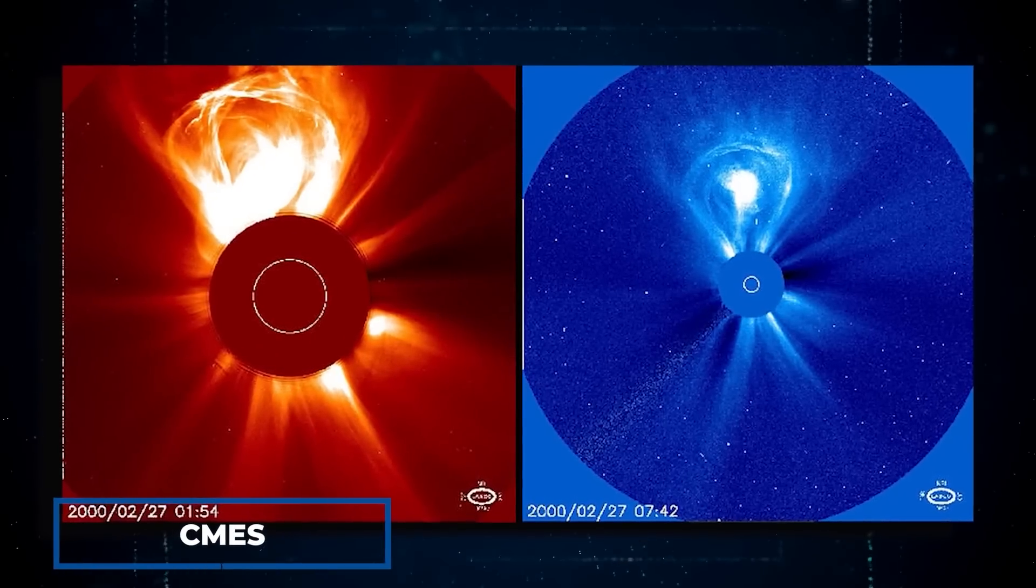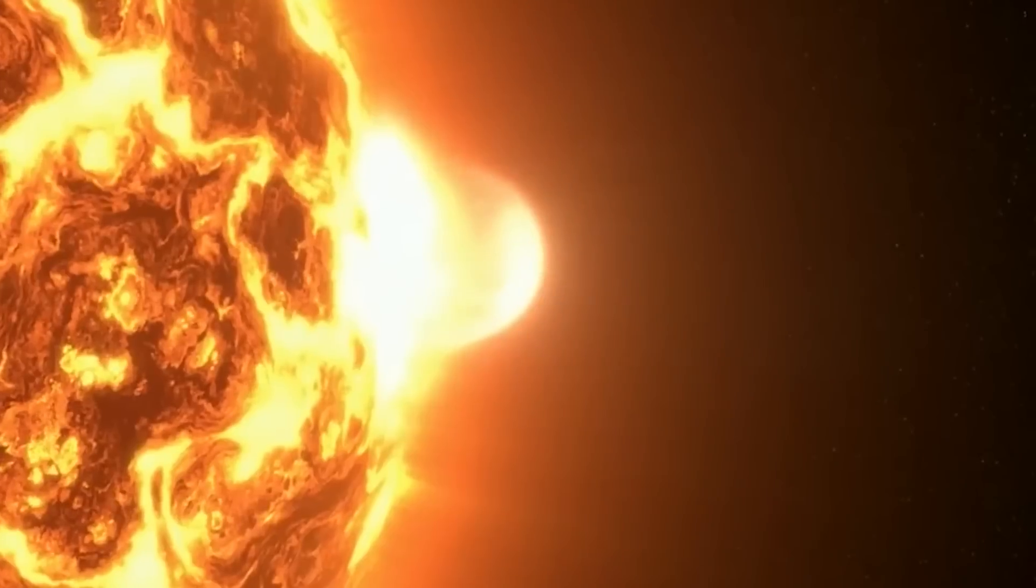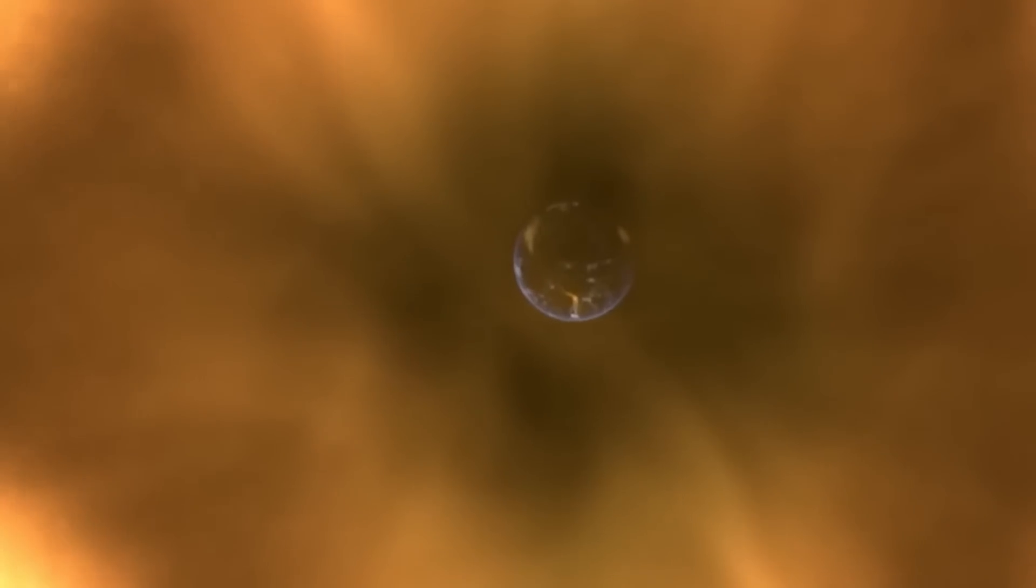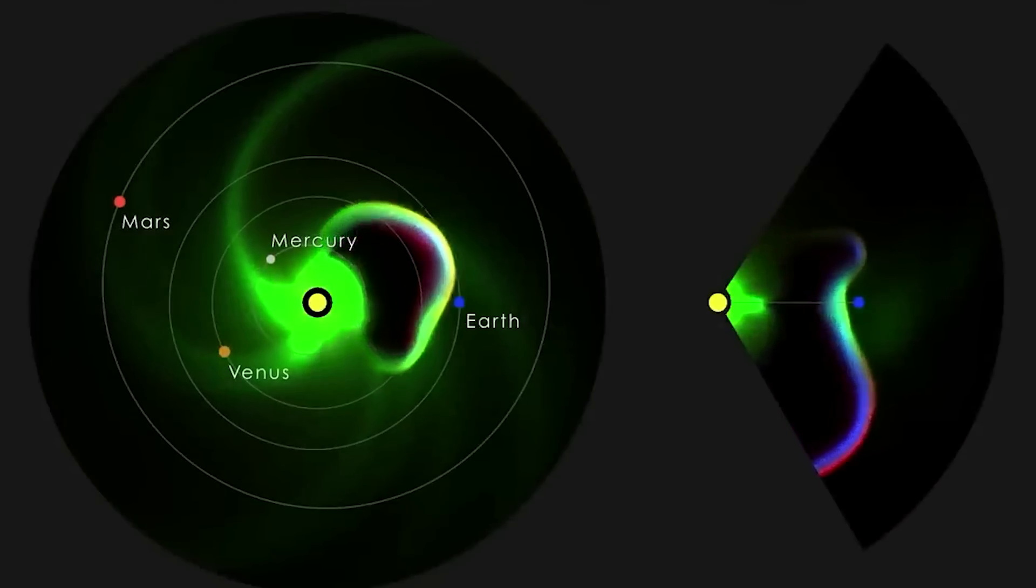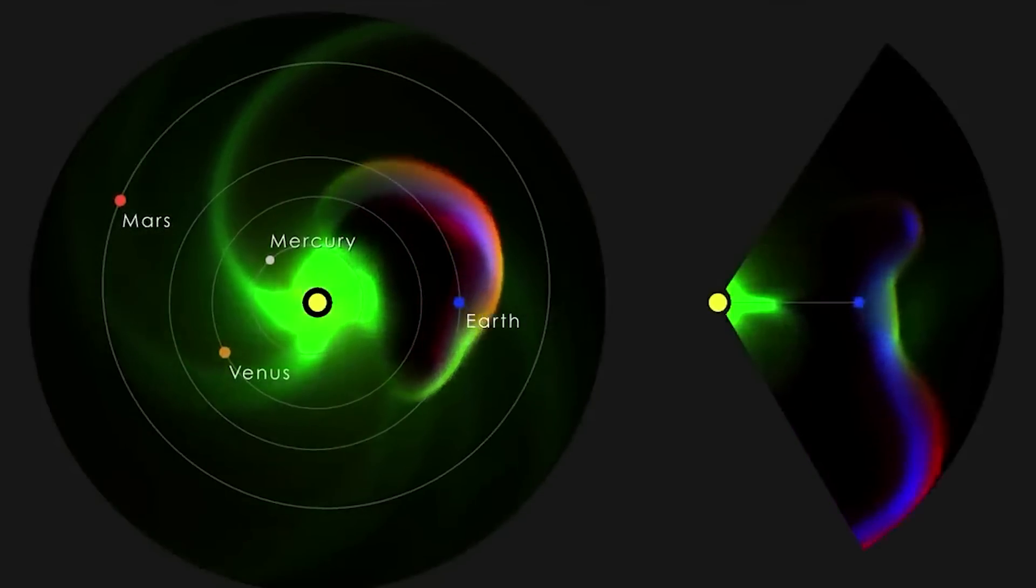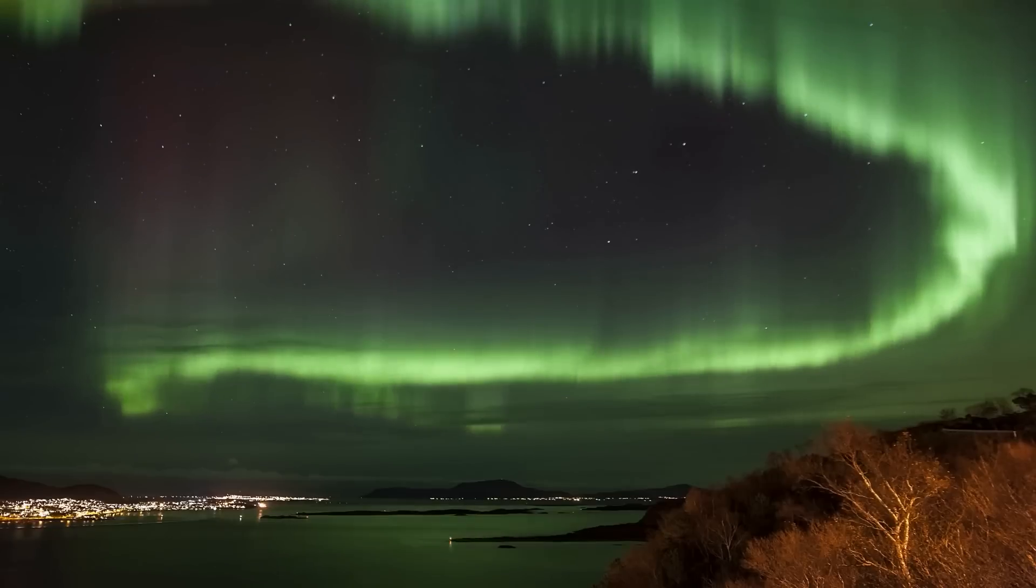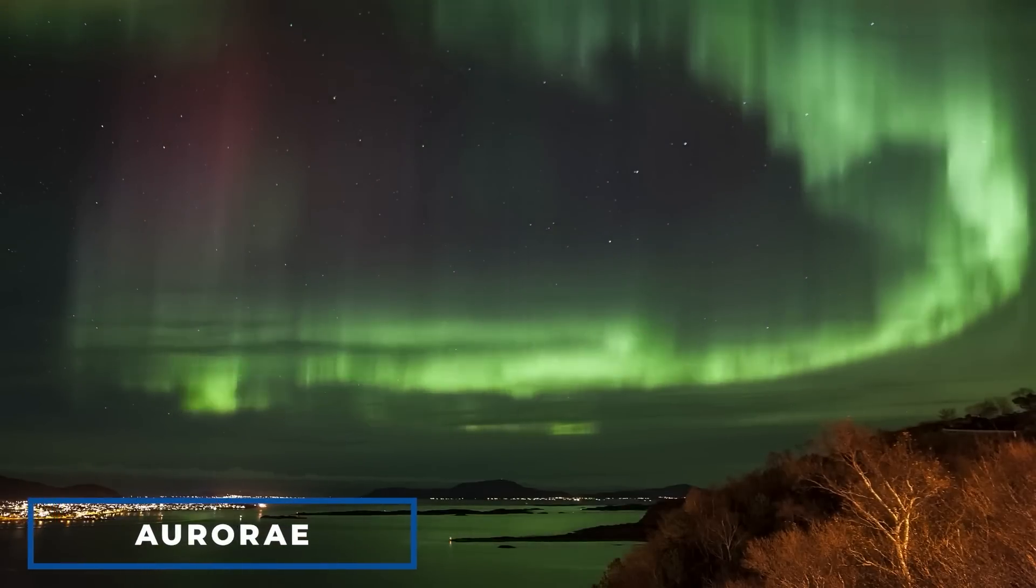CIRs, like coronal mass ejections are solar plasma structures that travel towards Earth, carrying shock waves and compressed magnetic fields, causing stormy space weather that usually appears as beautiful aurorae.